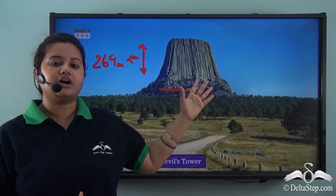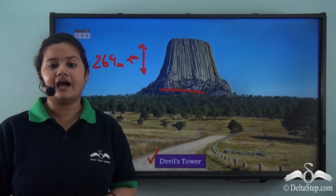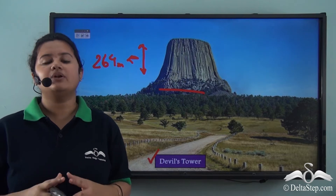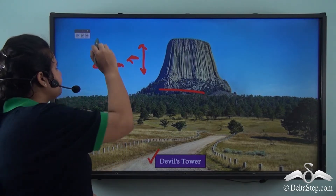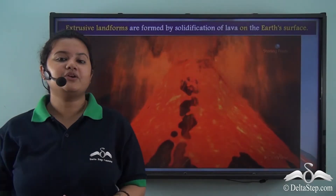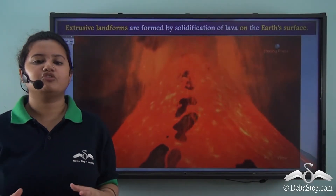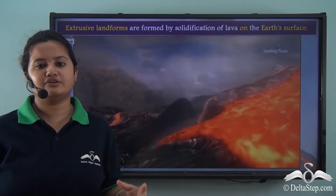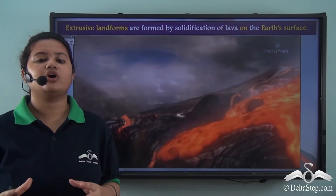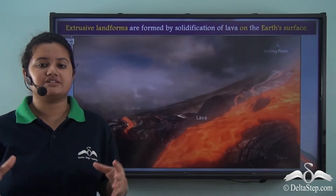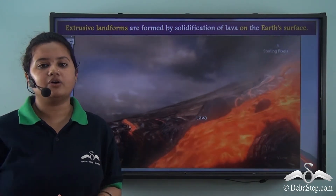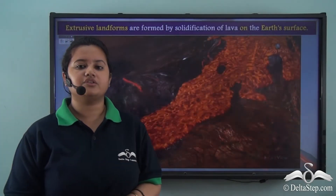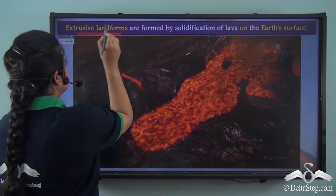This natural rock tower is an example of a landform formed by a volcano. Now let's see how landforms are formed by volcanoes. During volcanic eruptions, streams of molten rocks called lava flow out and spread over the earth's surface. Lava gradually condenses on reaching the earth's surface because the temperature here is comparatively lower. The landforms formed due to solidification of lava on the earth's surface are called extrusive landforms.